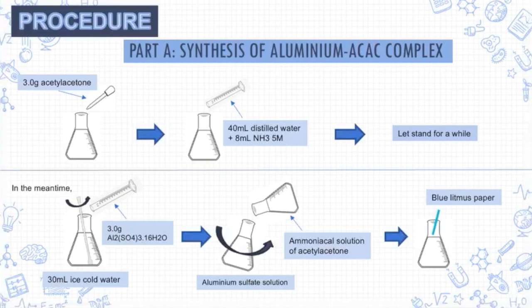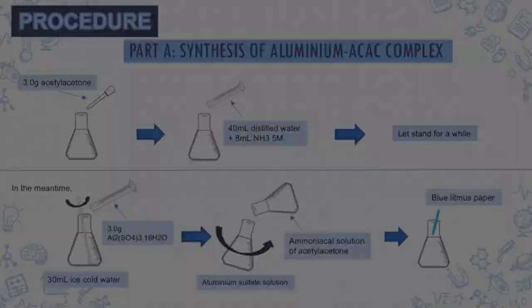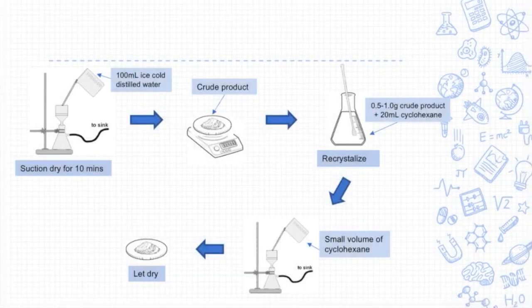After that, the pH was checked using blue litmus paper. The resulting precipitate was suction-dried. Next, a portion of the crude sample was recrystallized from cyclohexane. The resulting crystals were left to suction-dry and then dried thoroughly in air.